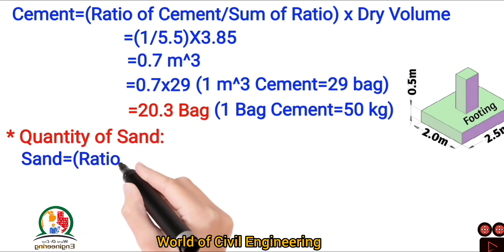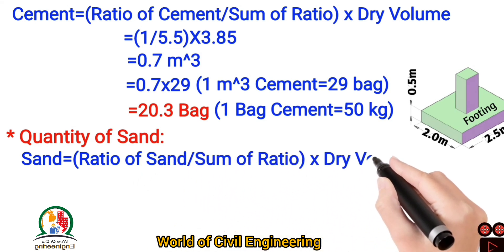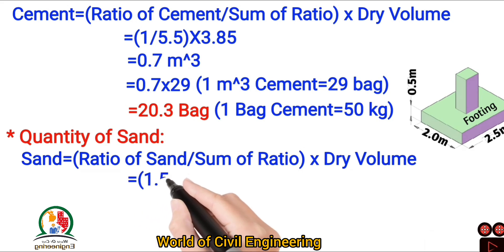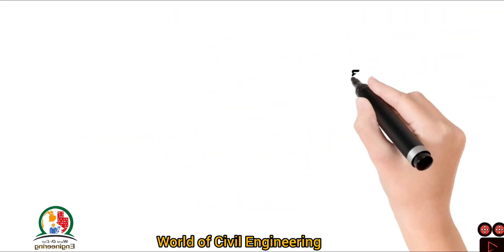Now we have to calculate quantity of sand. Sand equal to ratio of sand divided sum of ratio into dry volume equal to 1.5 divided 5.5 into 3.85 equal to 1.05 meter cube.